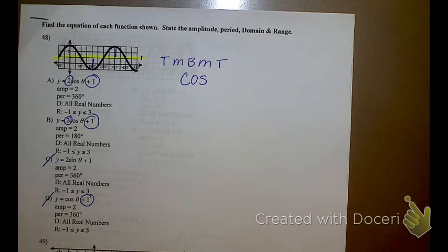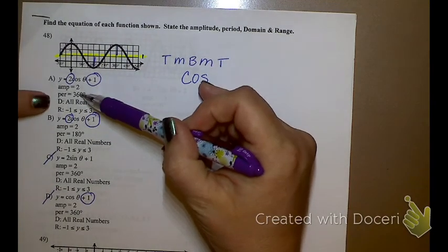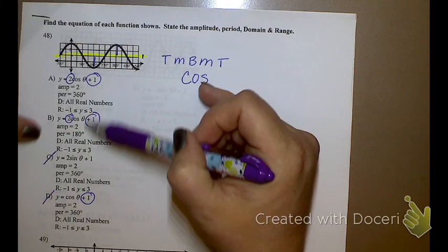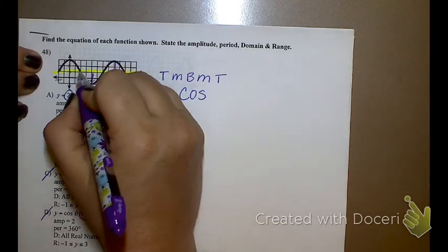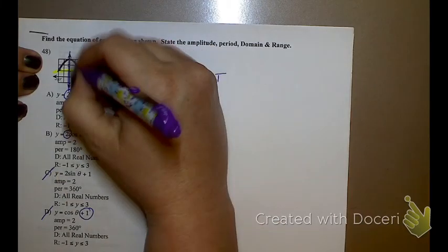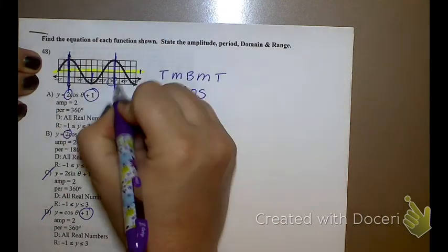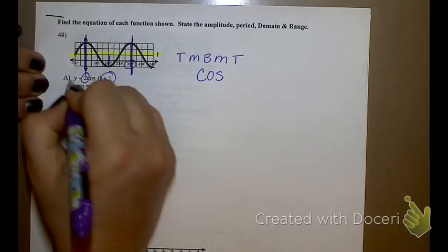So now I'm down to A and B. What is different between A and B? Period. You see that? So let's see. Top, middle, bottom, middle, top. This is the end of one period. And that's at 360 degrees. Which one has a period of 360 degrees? A. So A is my answer.